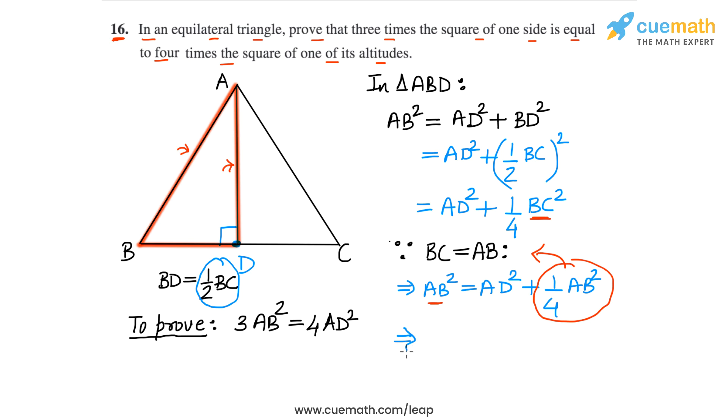So this will give us on the left side, AB square minus 1 fourth of AB square. So that will be three fourth of AB square on the left side. And on the right side, we will have AD square. And now we can simply cross multiply this four on the right side. And that will give us three times AB square is equal to four times AD square.